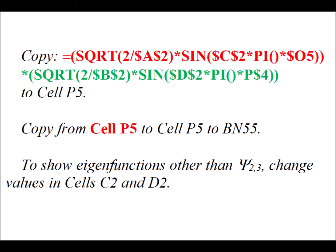Then we want to type in this complicated formula into cell P5. Note that the part at the beginning shown in red is the eigenfunction in the x direction. The part shown in green is the eigenfunction in the y direction. Overall, we're getting a product of a function of x times a function of y. Then we're going to copy that cell P5 from P5 to BN55, so this will end up being a big table of values.